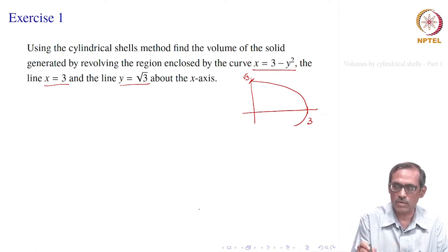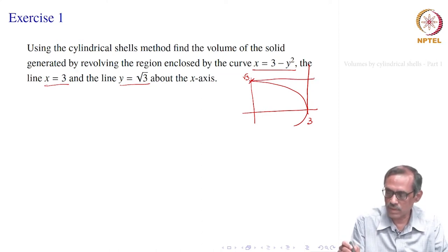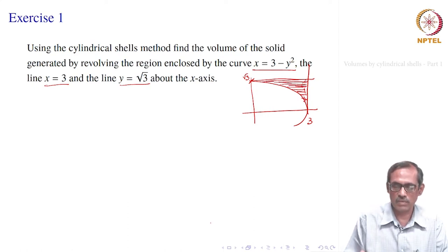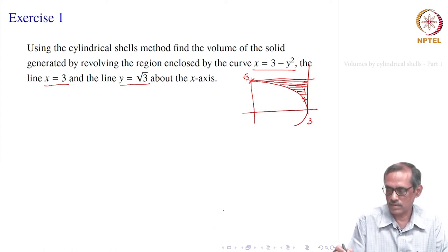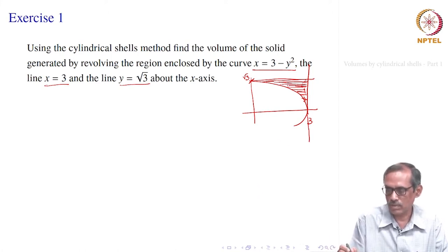We want to see the region enclosed by the curve 3 − y², the line x = 3, and the line y = √3. The region bounded by them is the shaded one — not inside the parabola, but outside. This region is revolved about the x-axis. One side we can take, and the solid will look something like this when revolved.